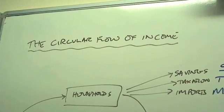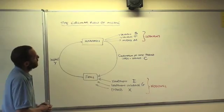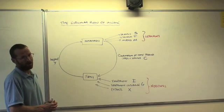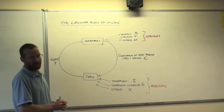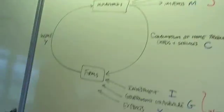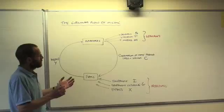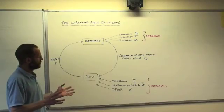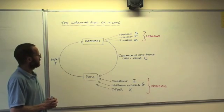This diagram shows the circular flow of income. It's a very simple example of how the macro economy works. If you remember, national income can be measured in one of three ways: income, output and expenditure. And whichever way that you use, you can use this model as well.